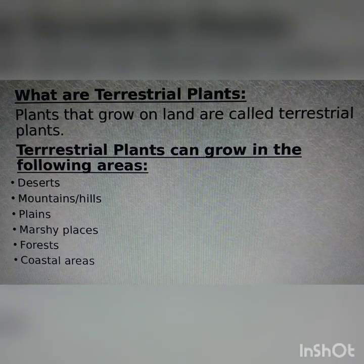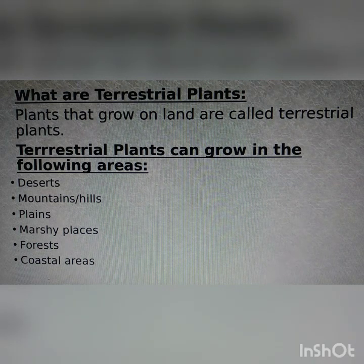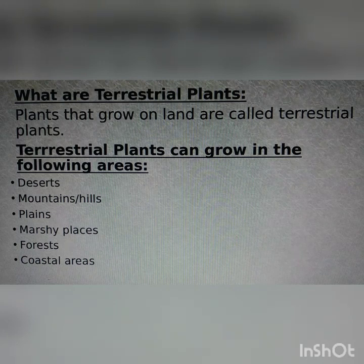What are terrestrial plants? Plants that grow on land are called terrestrial plants. These plants can grow in the following areas: deserts, mountains or hills, plains, marshy places, forests, and coastal areas.